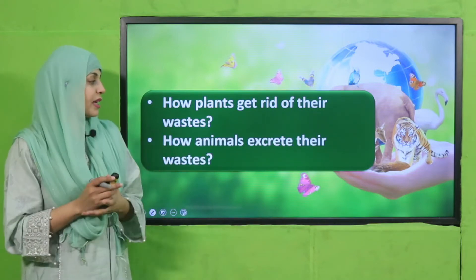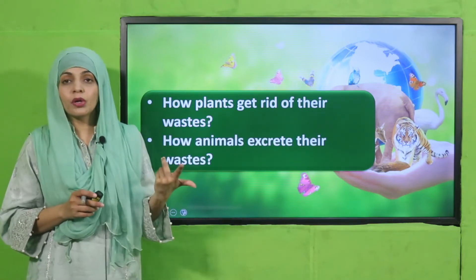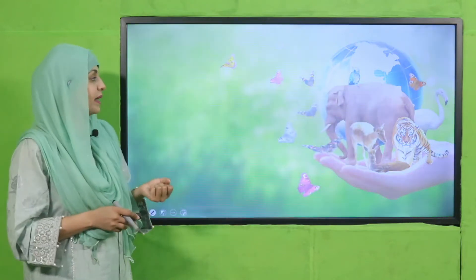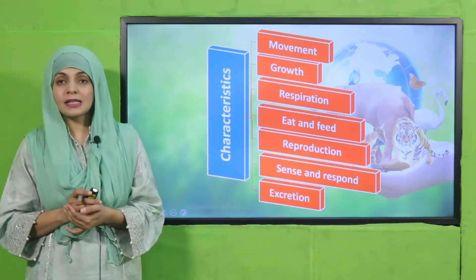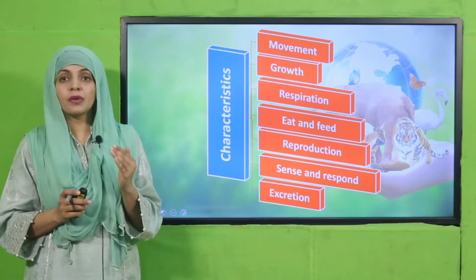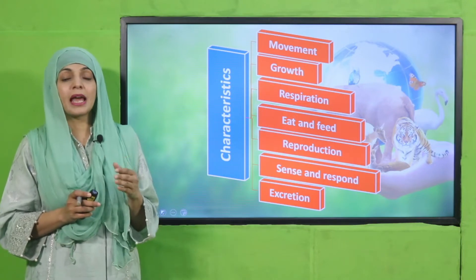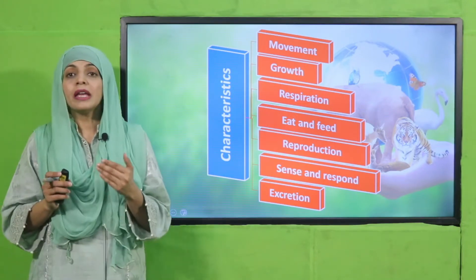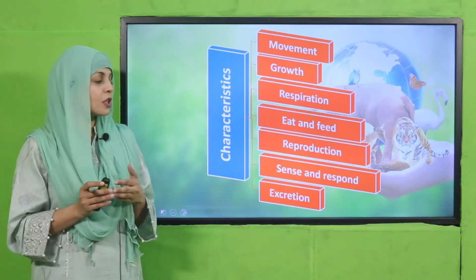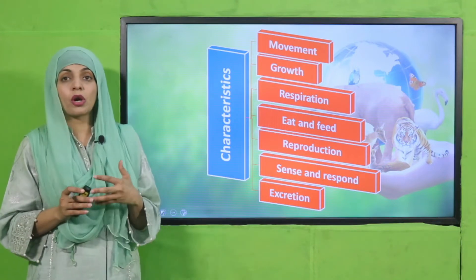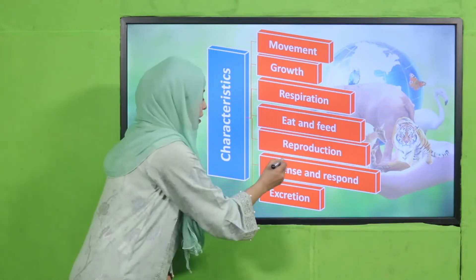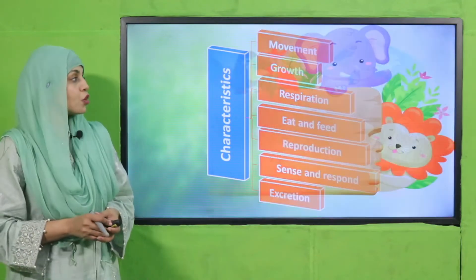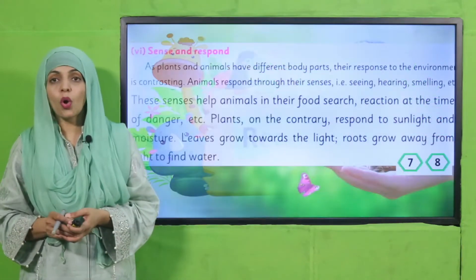How do animals excrete their waste? In the form of urine and feces. The characteristics of living things — plants and animals — are growth, movement, respiration, eating and feeding, reproduction, sense and respond, and excretion. Today we will discuss sense and respond and excretion.